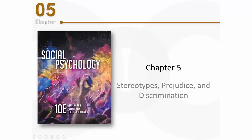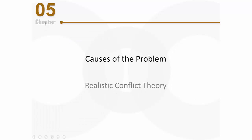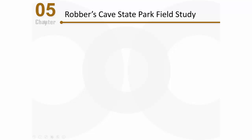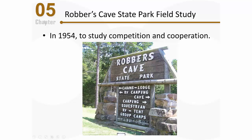Let's continue talking about stereotypes, prejudice, and discrimination, and some causes of these problems. This time let's focus on realistic conflict theory. In order to understand this theory, it helps to first talk about the Robbers Cave study, a famous study in social psychology conducted by Muzafer Sherif and his colleagues in 1954.